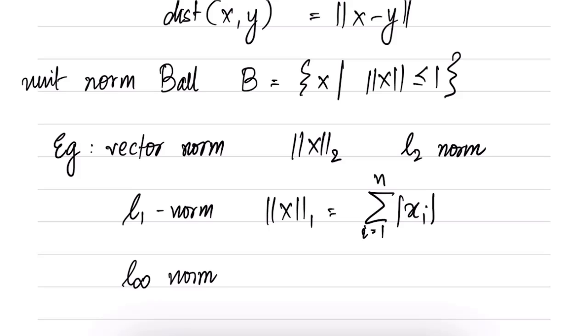There is also L∞ norm which is given by maximum over i of |x_i|. In particular both of these are not associated with any inner product. So there is no inner product such that x inner product with itself would give you L1 or L∞ norms.